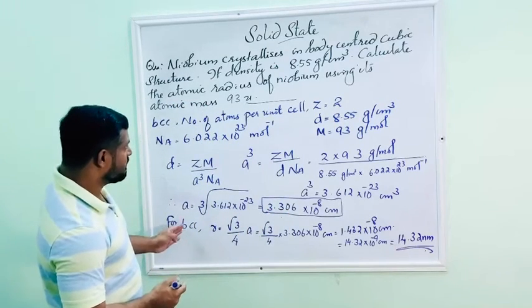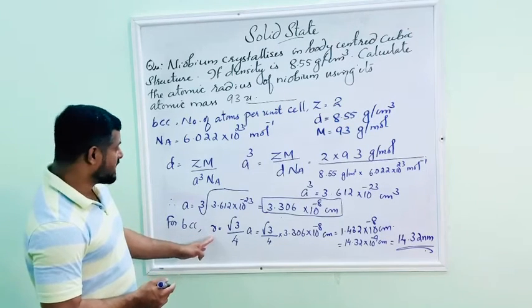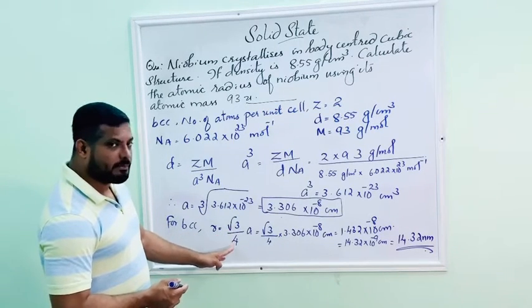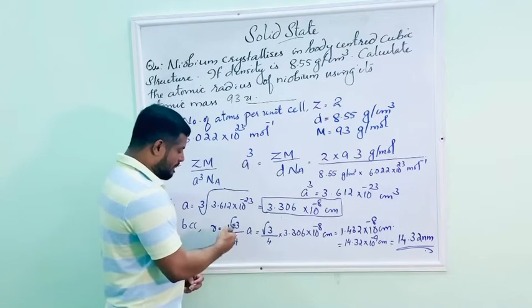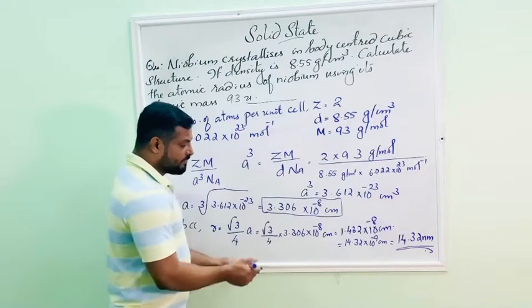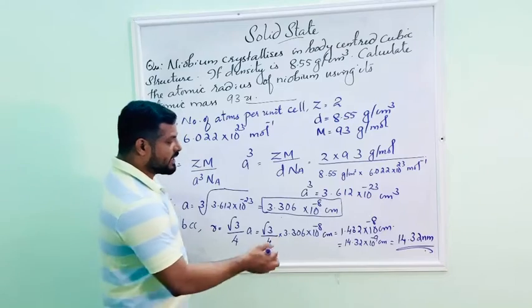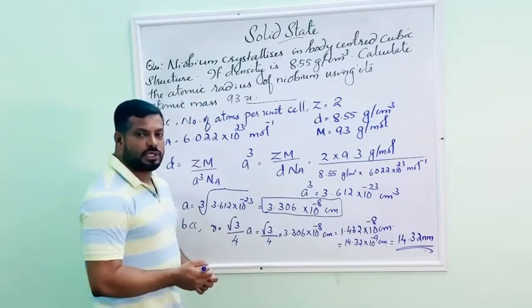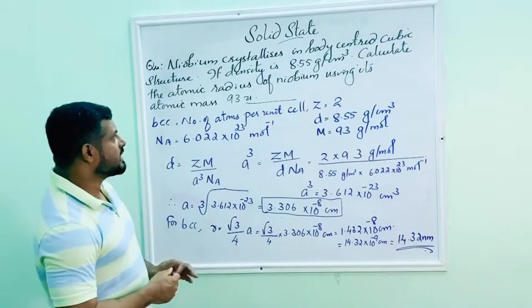So, for a BCC body centered cubic structure, atomic radius R is equal to root 3 divided by 4 into A. Substitute the value of A in this equation. R equals root 3 over 4 multiplied with 3.306 into 10 raise to minus 8.